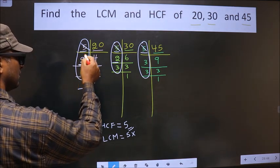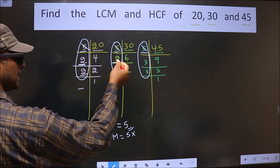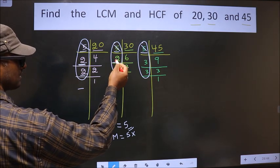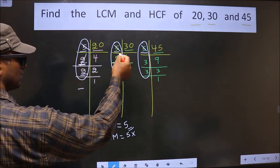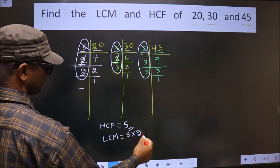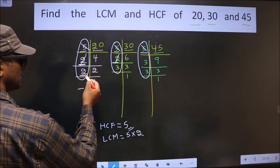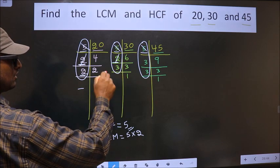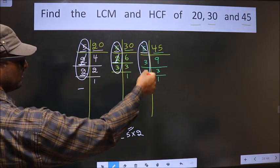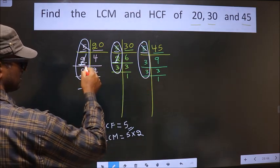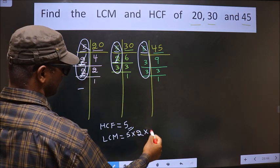2 we have. Do we have, next place, do we have 2 here? Yes. So you cut 2 right here. Now next number is 2. Do we have 2 here? No. Next place, do we have 2 here? No. Still you cut 2 right here.